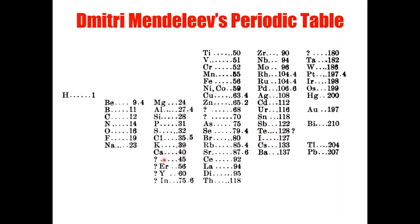This element here is now called technetium. Technetium is so rare that it could not be isolated until it was synthesized in a cyclotron in 1937. That's almost 70 years after Mendeleev had predicted its existence, 30 years after his death. To honor his achievements, scientists named element 101 Mendelevium in 1963.